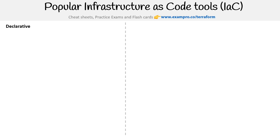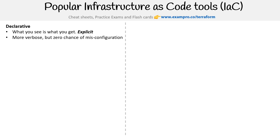Let's start with declarative. The idea here is what you see is what you get. Everything's explicit, it's more verbose, but there's zero chance of misconfiguration. This relies on the fact that they use a scripting language such as JSON, YAML, or XML. In the case of Terraform, they have their own language called HCL. These languages are structured to be very verbose, and there's not a lot of programming logic involved.